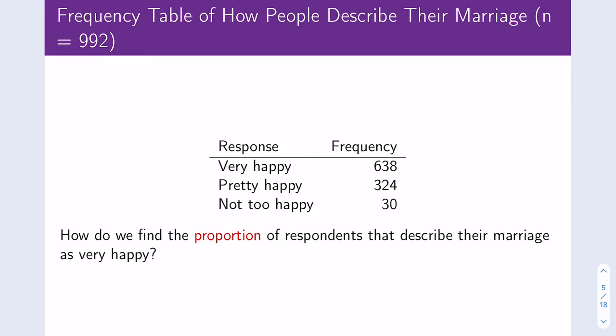We can represent this data as a frequency table. The responses to the question are very happy, pretty happy, or not too happy, shown in the first column. The frequency column shows that 638 people said they were very happy in their marriage, 324 said they were pretty happy, and 30 said they were not too happy.